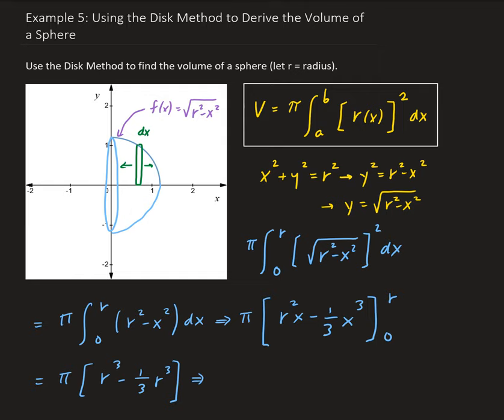This result is going to give us two-thirds pi r cubed. However, remember this is only for half the sphere, so we need to double our result.